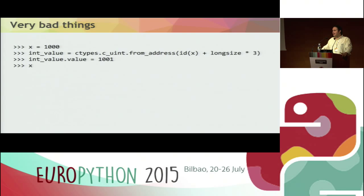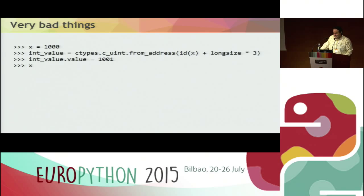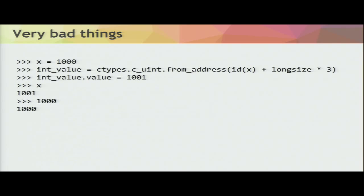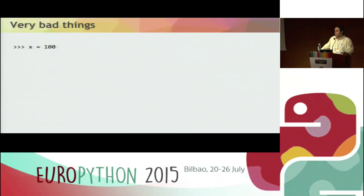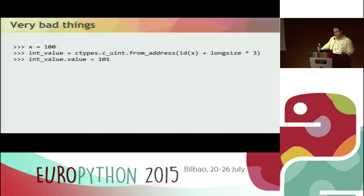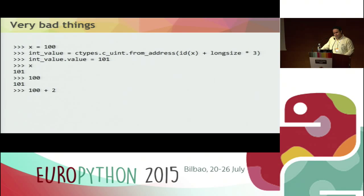Let's play a little. I can set X to 1000, get the ob_digit of X, and set this value to 101. Integers are immutable — well, with ctypes it's false. I get X and now X is 1001, while the literal 1000 is still 1000. But 1000 is too much — let me be a little more dangerous. I set X to 100, change the ob_digit of 100 to 101. Now X is 101, but 100 itself is now 101. And 100 plus 2 is 103.